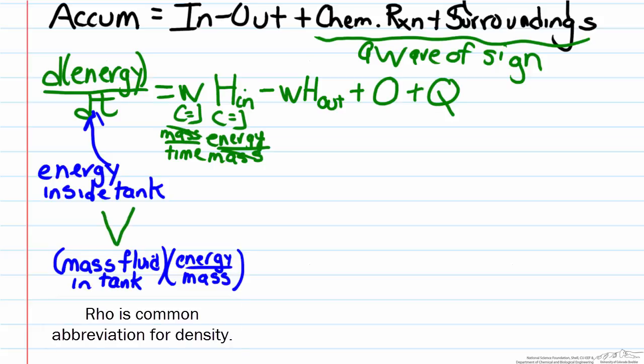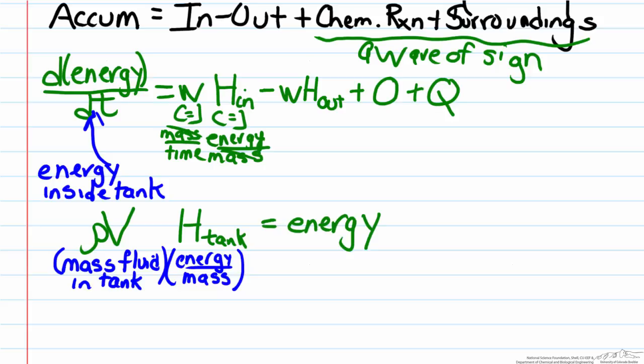In order to convert from volume to mass, we multiply by ρ. In order to get the energy per mass, that again is simply the enthalpy, but in this case the enthalpy of the tank. And this will equal the energy term that's in our differential equation. With this information, we can restate our energy balance as d(ρVH_tank)/dt equals the right hand side.